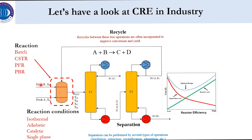Let's have a look at CRE in industry. Fresh feed A and fresh feed B with mole fractions x_A and x_B are fed to the reactor. The reaction could be batch or a flow system — among which CSTR, PFR, and PBR are common. Reaction conditions could be isothermal, adiabatic, catalytic, single-phase or multiphase. After the reaction proceeds, products are formed — unreacted A, unreacted B, and formed products C and D — which are then sent to the distillation or separation scheme.